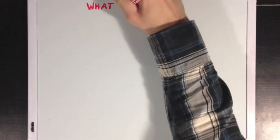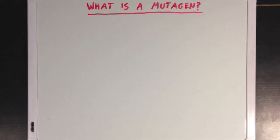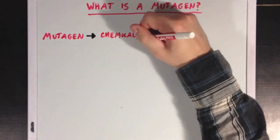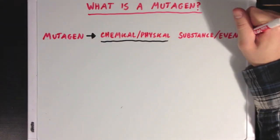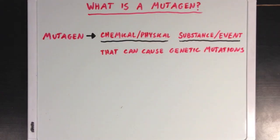So, what is a mutagen? A mutagen is any chemical substance or physical event that can cause genetic mutations. Chemical substances, like certain poisons, could be mutagens, or physical events, like UV light or different kinds of radiation, could also be mutagenic.